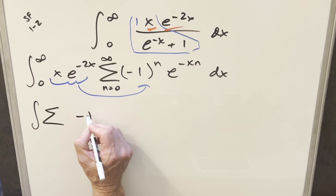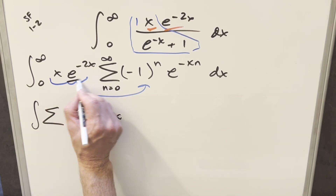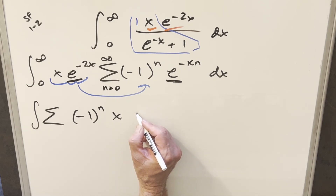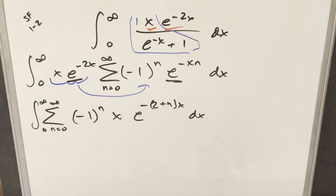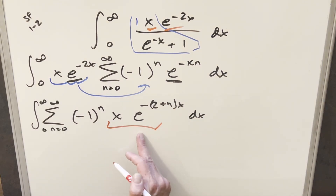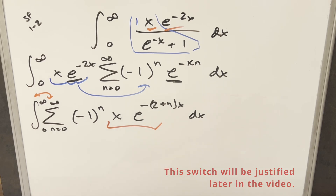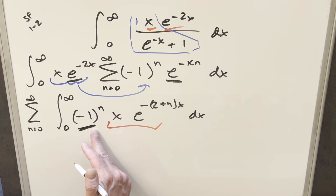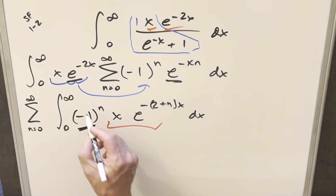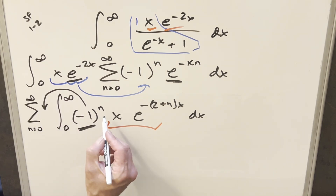So when we do that, we leave (−1)^n in front and bring the x in. With the same base for e^(−2x) and e^(−nx), we can combine them: we get e^(−(2+n)x). This is actually not hard to integrate — we can use integration by parts. Before that, let's swap the order of the sum and the integration. Since n is just a constant with respect to x, the exponential factor e^(−(2+n)x) can stay inside the sum.